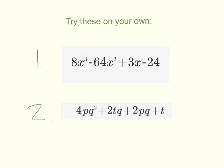Here are two examples that I'd like you to try on your own. 8x cubed minus 64x squared plus 3x minus 24. And 4pq squared plus 2tq plus 2pq plus t. The second one's a little bit tricky. You may have to rearrange the terms to get commonalities found. Good luck.